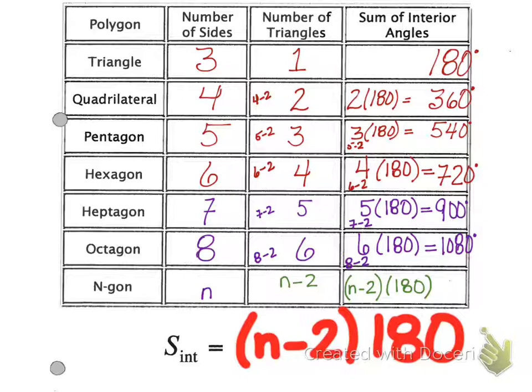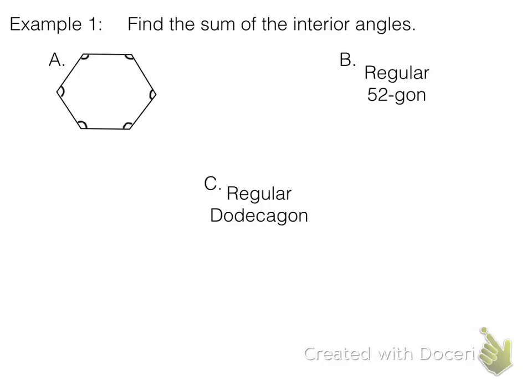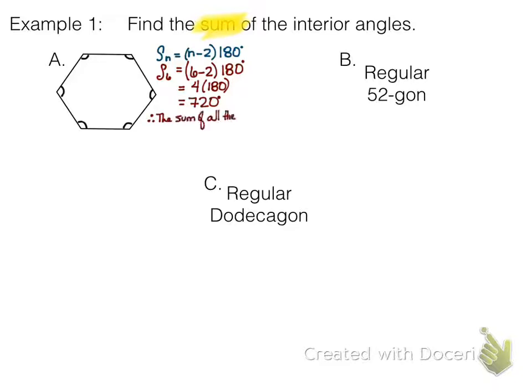Let's do some examples — put these in your notebook; the next page is for your notes. Remember you can pause this and copy down whenever you need to. Find the sum of all of the interior angles. Part A: six sides, so it's a hexagon. Using our formula, n minus two times 180: n is six, so six minus two is four, and four times 180 gives us 720 degrees as the sum of all the angles in a regular hexagon.